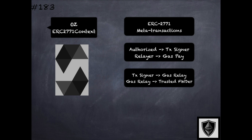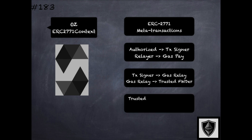ERC 2771 specifies four different entities. The transaction signer signs and sends the transaction off-chain to the gas relayer. The gas relayer receives transactions, pays for the gas, and forwards them to a trusted forwarder contract on-chain. The trusted forwarder is responsible for verifying the signed transaction, checking the nonce and signature, and then forwarding the verified transaction to the destination contract. The library provides various functions to help with this protocol.